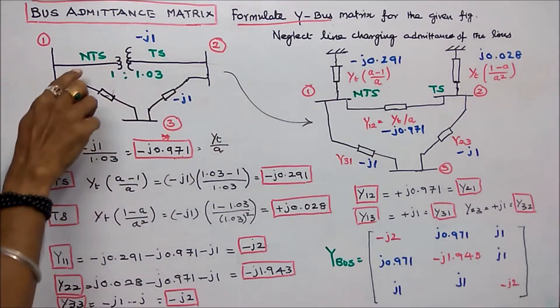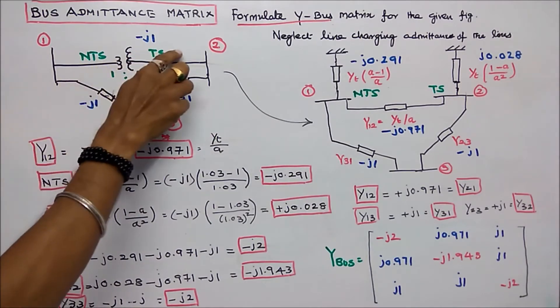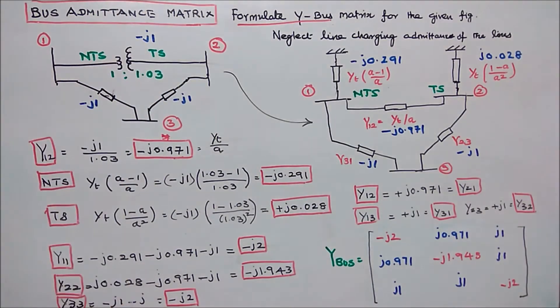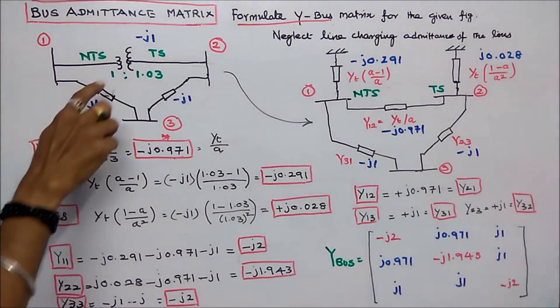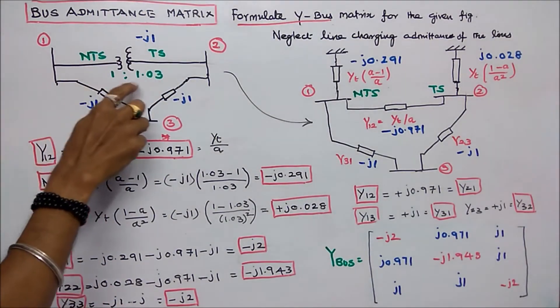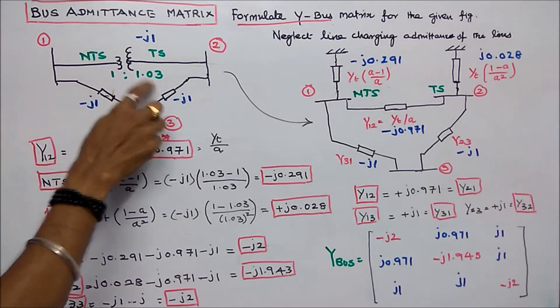First step: we have to mark NTS (non-tap-setting) and TS (tap-setting). This is one, and A is equal to 1.03.